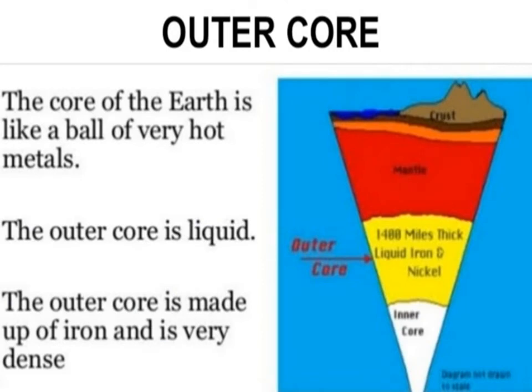The Earth's outer core is made up of hot liquid iron and nickel and is about 1,400 miles thick. The core of the Earth is like a ball of very hot metals.